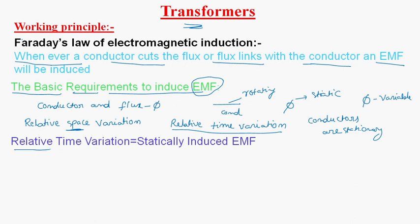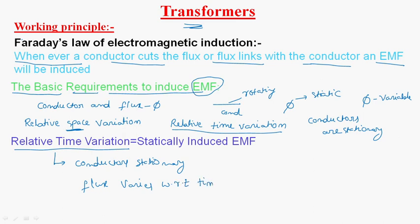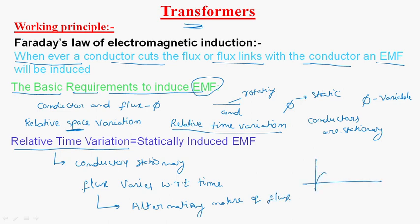Relative time variation means conductors are stationary and flux varies with respect to time. Flux varying with respect to time means the flux is of alternating nature — it varies with respect to time like this. Whenever this alternating flux links with the stationary conductor, EMF will be induced in the transformer. In case of transformer, the EMF induced is statically induced.